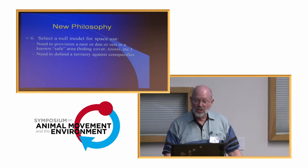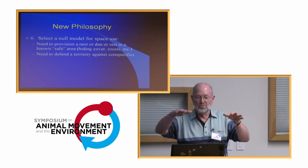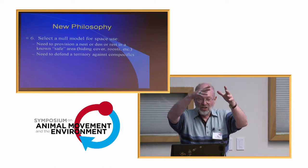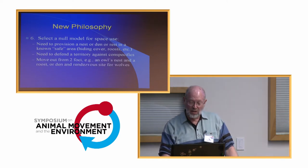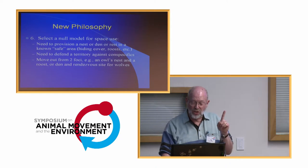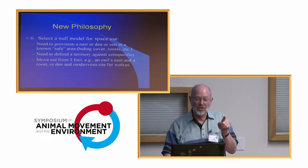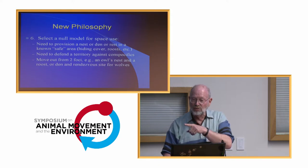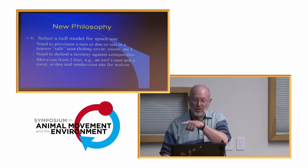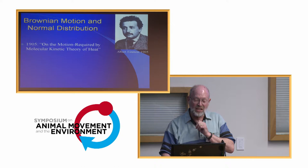What about individuals with two foci — like an owl's nest and its roost, two different places in its home range — or a wolf den and a rendezvous site they move pups to during breeding season? We'd like null models incorporating those kinds of things. How do we do that? Let's go back to Albert Einstein.